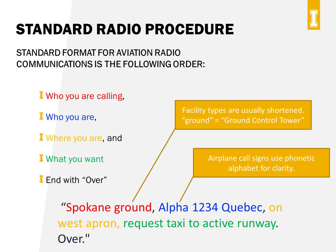Two things to note here. First, facility types are usually shortened for easy use — so instead of saying ground control tower, you shorten it to just 'ground.' Second, call signs are a unique alphanumeric code assigned to each aircraft, and drones actually have them too once you register your drone. For clarity, we use a phonetic alphabet to relay the call sign.